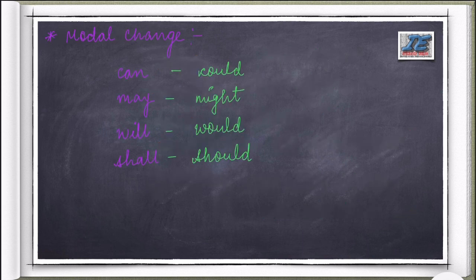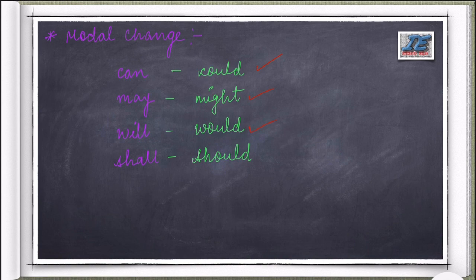Now comes modal change or future tense change. 'Can' changes into 'could,' 'may' changes into 'might,' 'will' changes into 'would,' and 'shall' changes into 'should.' There are also a few other minor changes: 'this' becomes 'that,' 'these' becomes 'those,' and 'here' becomes 'there.' These changes apply both ways between direct and indirect speech.